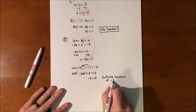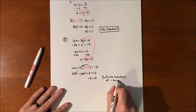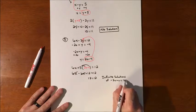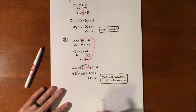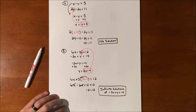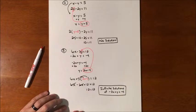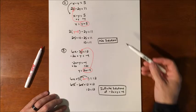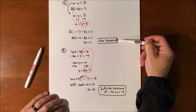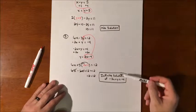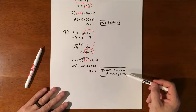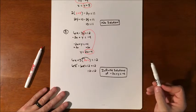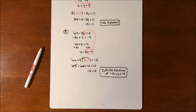Those are our last two special situations. Otherwise, we get a coordinate that satisfies both equations and the lines cross. Here, the lines are parallel with no solution. In the infinite solution case, the lines are the same. And that is solving systems of linear equations by substitution.